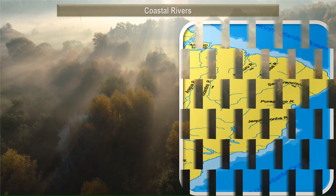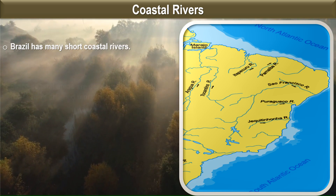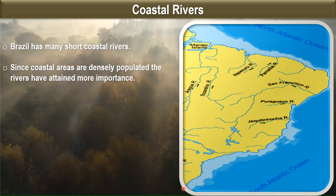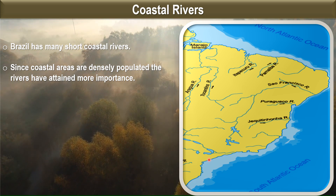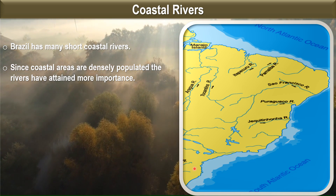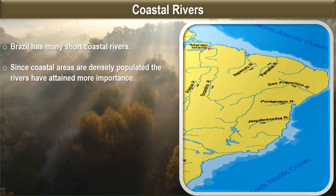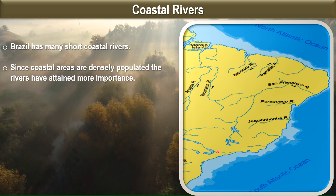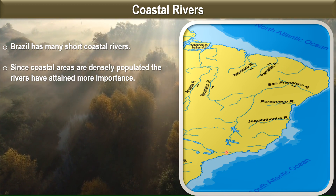Lastly, there are many short coastal rivers in Brazil. Since the coastal areas are densely populated, these rivers have attained more importance. Brazil has a coastline of almost 7,400 kilometers. The land here is fertile, agriculture is the main occupation, there are many minerals found in this region, and the climate is also very favorable — hence the eastern coast is densely populated.